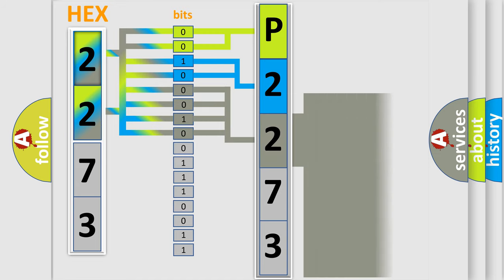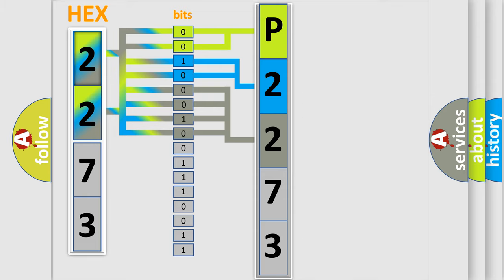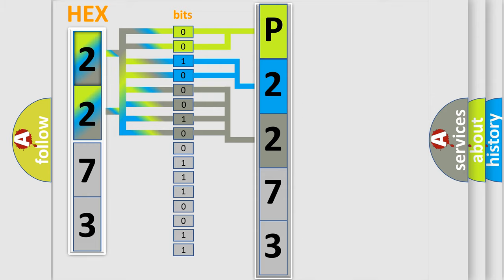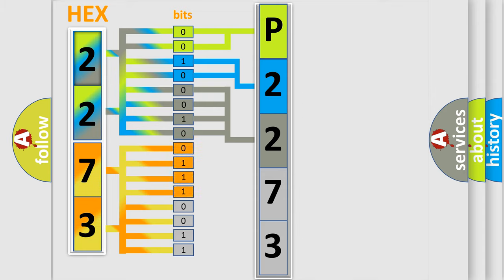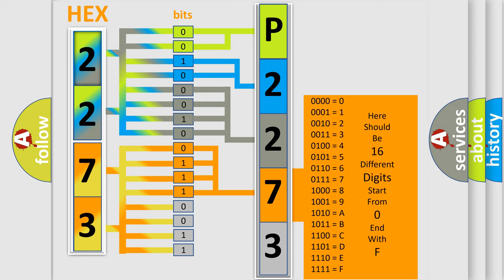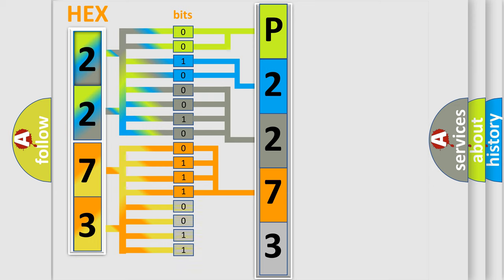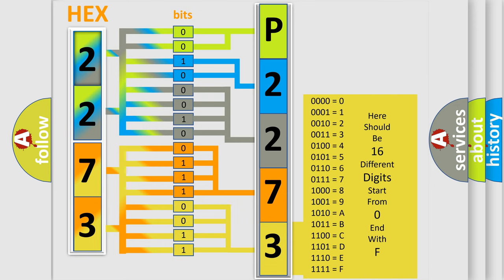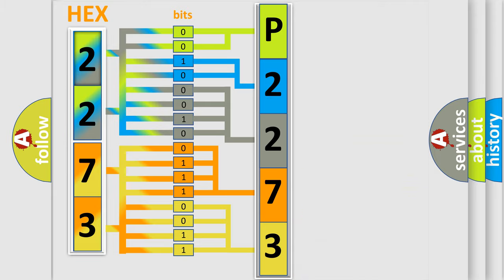The second byte is composed of a combination of eight bits. The first four bits determine the fourth character of the code, and the combination of the last four bits defines the fifth character. A single byte conceals 256 possible combinations. We now know in what way the diagnostic tool translates the received information into a more comprehensible format.